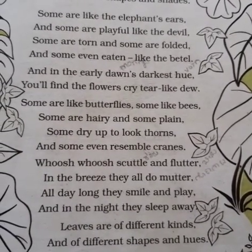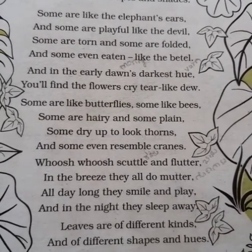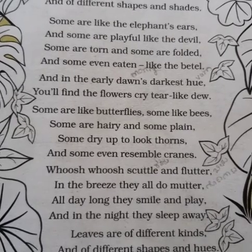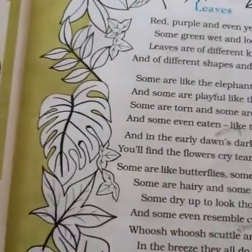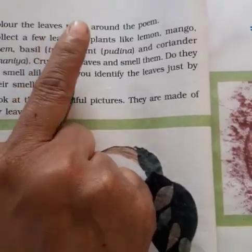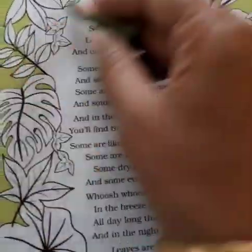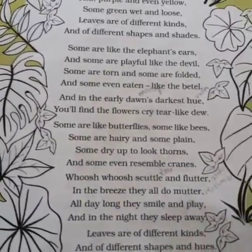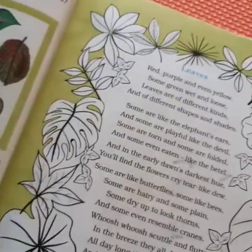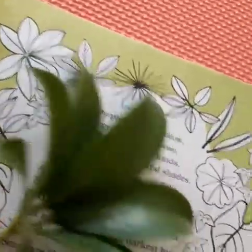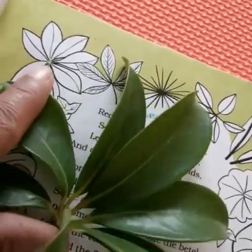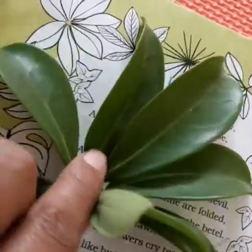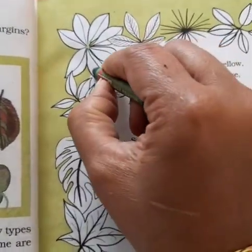Now see here — a poem is there. In live class we'll sing this one. Today's our work is to color the leaf. So we turn to page number 14. See what is given here — color the leaves made around the poem. The same leaves are here in the corners.